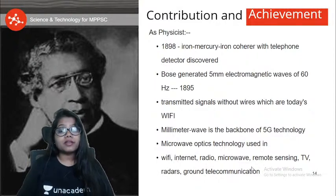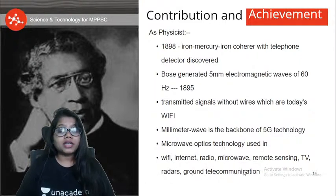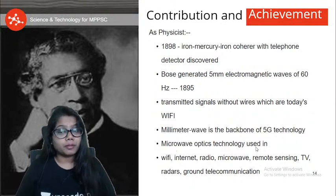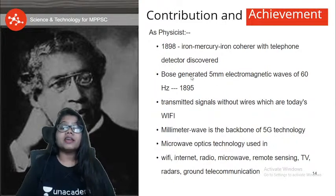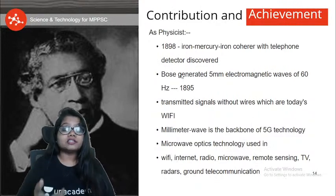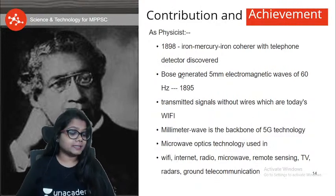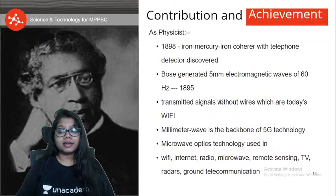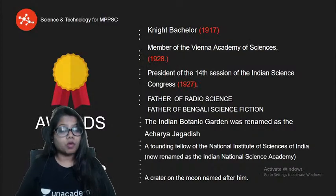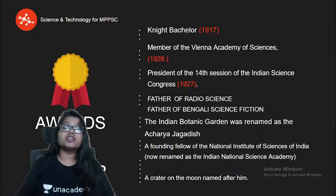Wi-Fi, Internet, Radio, Microwave, Remote Sensing, TV, Radars, Ground Telecommunication — all of these use Microwave Optics Technology, and all these inventions happened because of the small instruments he built. He also invented a detector for electromagnetic waves, and in 1898 he built the iron-mercury-iron coherer which detected telephone waves.